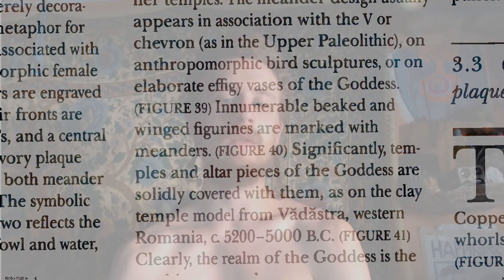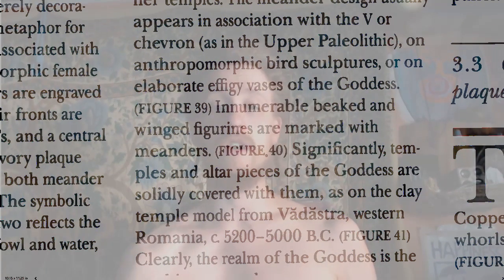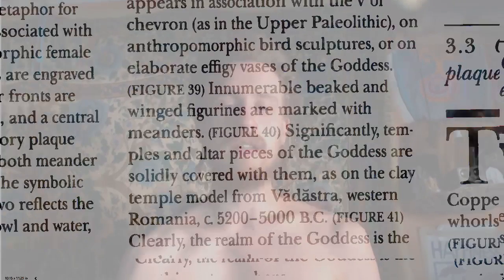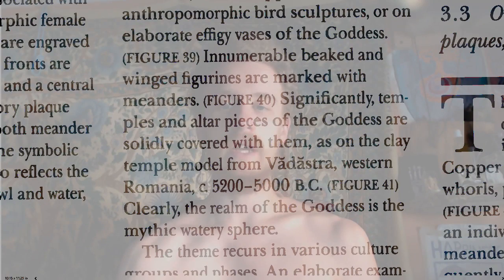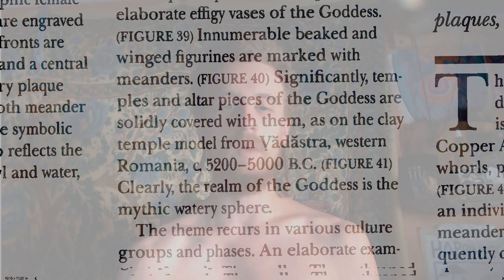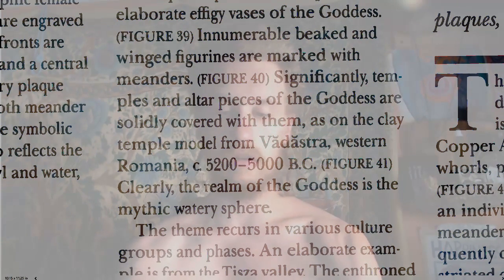Innumerable beaked-winged figures are marked with meander — figure 40 is just one example of many, hundreds like that. Significantly, temples and altarpieces of the goddess are solidly covered with them, as on the clay temple model from Varastara, Western Romania, 5000 BC — figure 41.